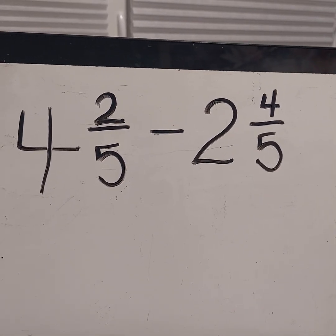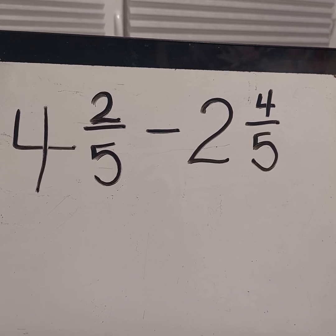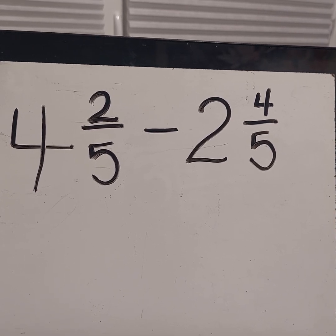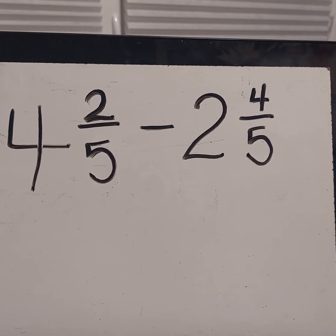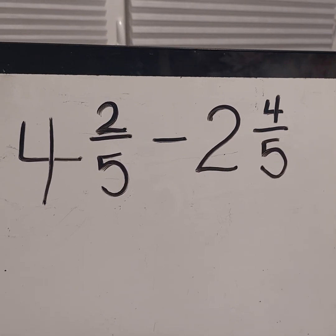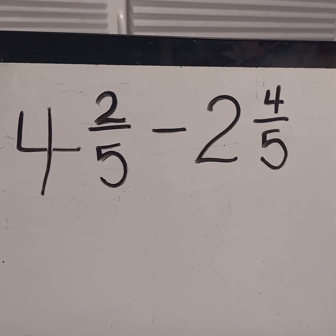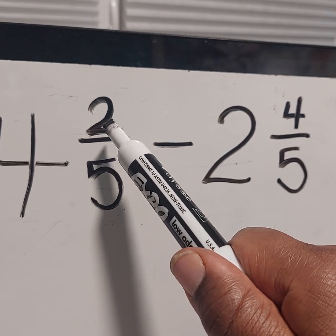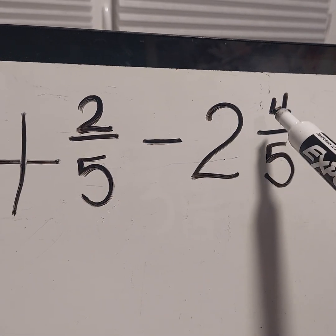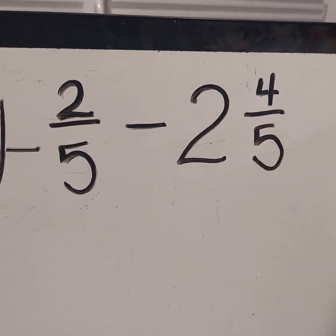But the next thing I want you to look at is your numerator. Do you have enough numerator to subtract? Remember, this is subtraction, so this is quite important. So what I want you to notice is that I have a 2 here, but I'm trying to take away 4. I do not have enough.